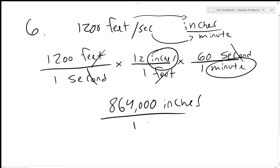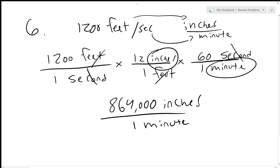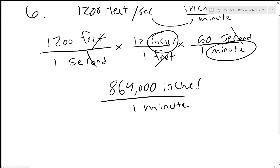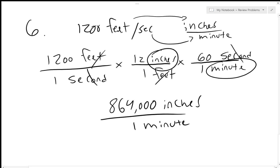So the answer is 864,000 inches per minute. Some of you might be confused why the bottom is just one — when we put the calculation in the calculator we get 864,000, and our units tell us it's inches over one minute. Whatever number we get is always going to be over one, which in this case is minutes.